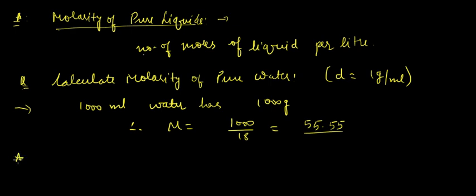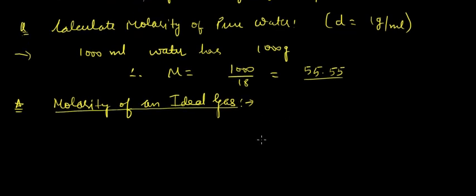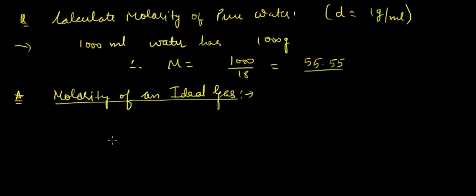Next let's discuss molarity of an ideal gas. Molarity of an ideal gas can be written as M equals n by V, and PV equals nRT.